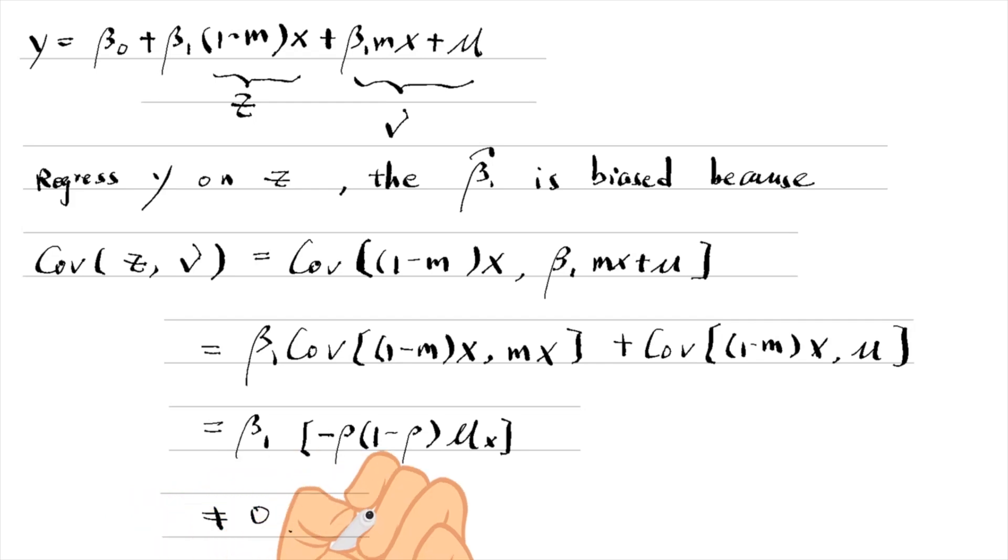In other words, if the missing data indicator is omitted from the model, the OLS estimate is inconsistent.